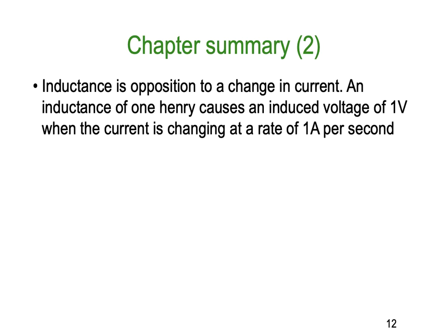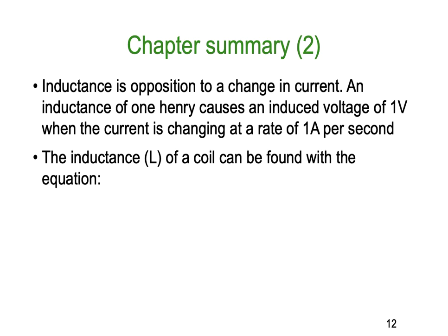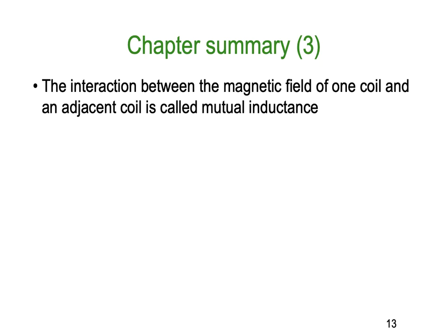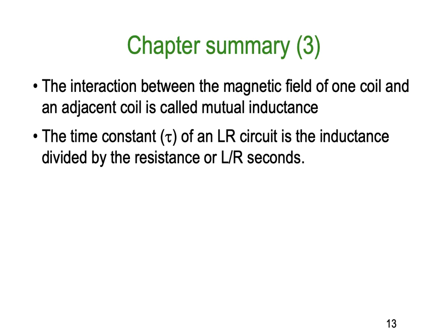An inductance of one henry causes an induced voltage of one volt when the current is changing at a rate of one amp per second. The inductance L of a coil is found with L = N²μA/l — the number of turns squared, multiplied by permeability and area, all divided by length (the only inversely proportional quantity). The interaction between the magnetic field of one coil and an adjacent coil is called mutual inductance. The time constant τ for an RL circuit is L divided by R, in seconds.